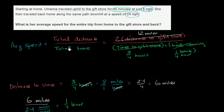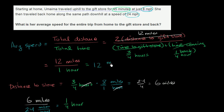Now we're ready to calculate her average speed for the entire trip. Total distance is 12 miles, and total time is 3/4 hours plus 1/4 hour, which is exactly 1 hour. So her average speed is 12 over 1, which is 12 miles per hour.